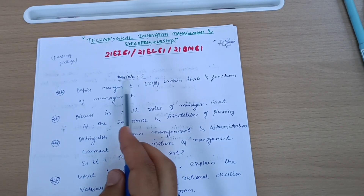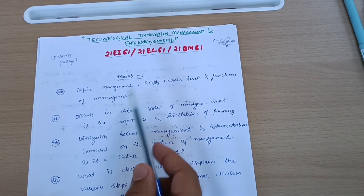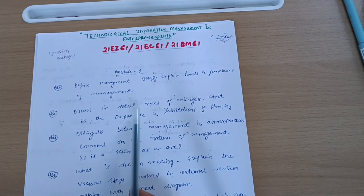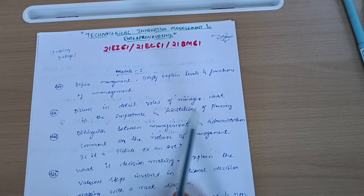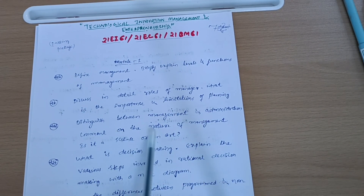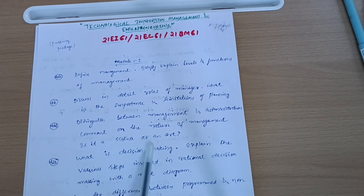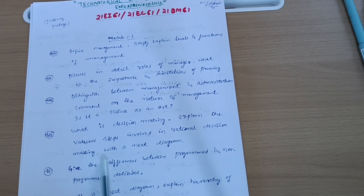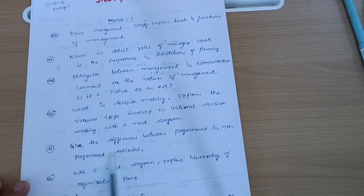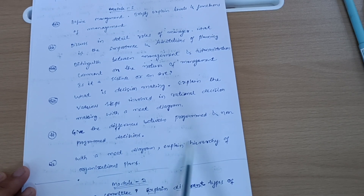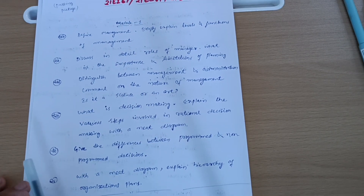From Module 1, the important questions are: define management and briefly explain levels and functions of management; discuss in detail the roles of a manager; explain the importance and limitations of planning; distinguish between management and administration; comment on the nature of management — is it science or an art; explain decision making and the various steps involved in rational decision making with a neat diagram; give differences between programmed and non-programmed decisions; and explain hierarchy of organizational plans.